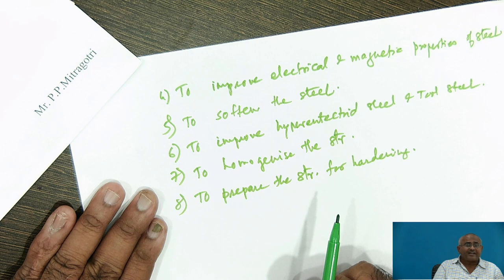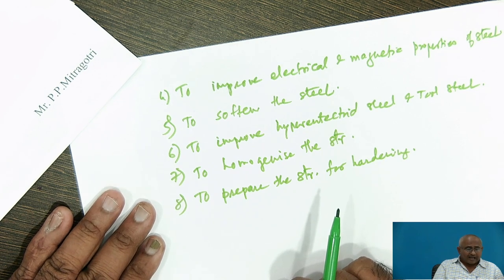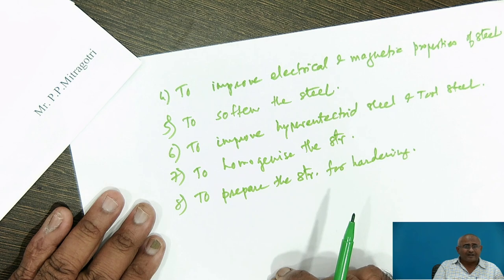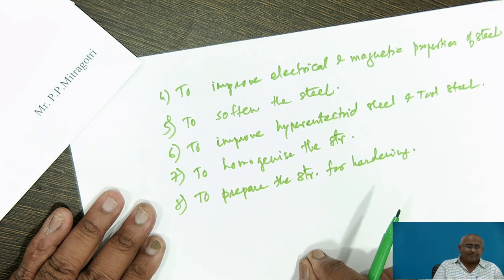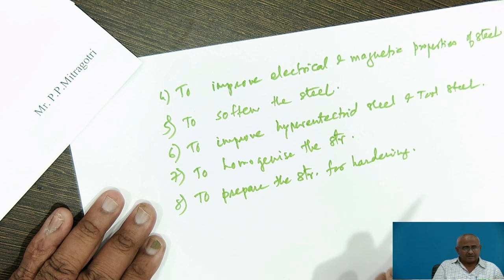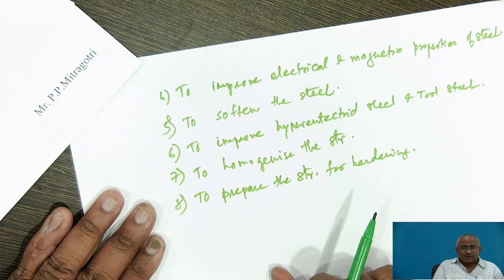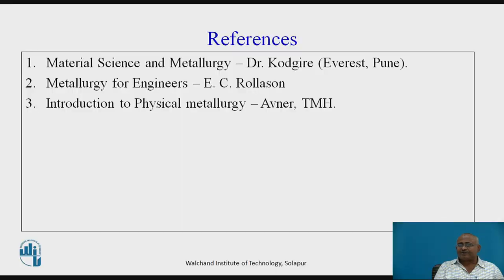We have now studied eight purposes of annealing. After studying these purposes, we will next discuss the various types of annealing and which purpose is satisfied by each process. For further reading, refer to Material Science and Metallurgy by Dr. Kodgire, Metallurgy for Engineers by E.C. Rolason, and Introduction to Physical Metallurgy by Avner, which is a TMH publication. Hope you have understood the purposes of annealing. Thank you.